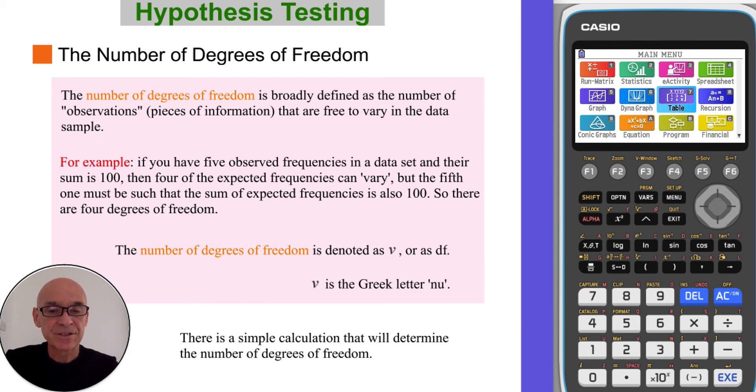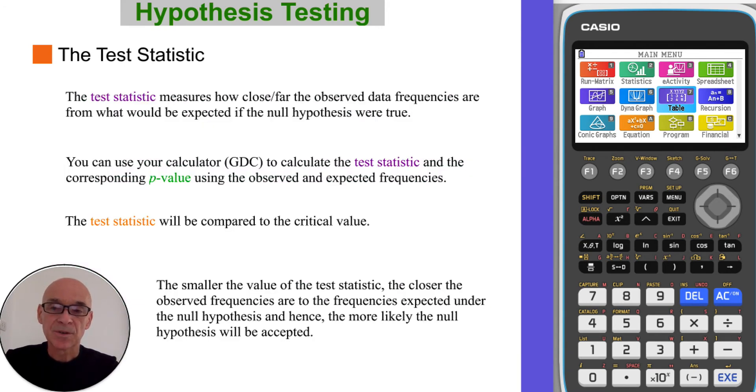The number of degrees of freedom is denoted with the symbol ν or df. So the test statistic measures how close or far the observed data frequencies are from those that you would have expected if the null hypothesis were true. And as I said, we will use our calculator to calculate the test statistic and the corresponding p-value. That test statistic will be compared to the critical value. Obviously, the smaller the value of the test statistic, that means the closer the observed frequencies are to the expected frequencies under the null hypothesis. Hence the more likely that the null hypothesis will be accepted.